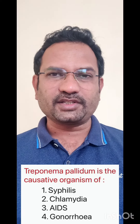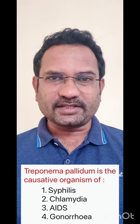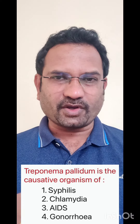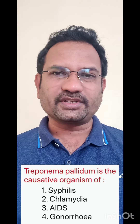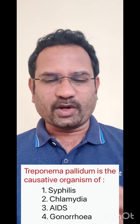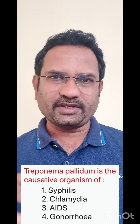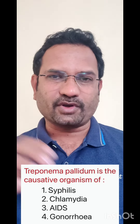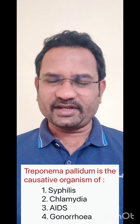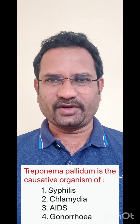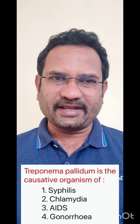Now chlamydia trachomatis causes trachoma, a kind of eye disease. AIDS is the disease caused by the virus HIV — human immunodeficiency virus. Understand the difference: acquired immunodeficiency syndrome is the disease, HIV is the virus which causes the disease. Now Neisseria gonorrhoeae causes gonorrhea. So let us go on to the next question.